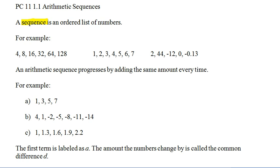A sequence is just an ordered list of numbers. So, here they are in order: 4, 8, 16, 32, 64, 128. Notice we've got the 1, 2, 3, 4, 5, 6, 7. Notice our last guy: 244, negative 12, 0, negative 0.13. Some of you might be thinking, well, how is that a sequence? There's no pattern.